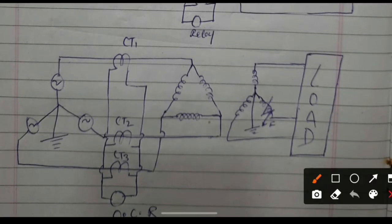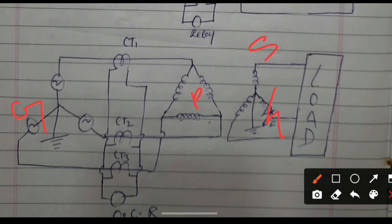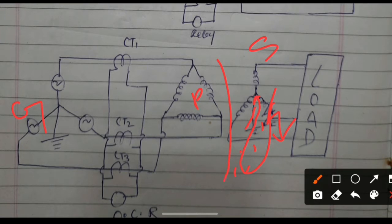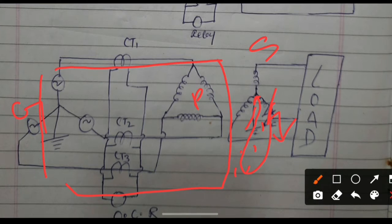Now let's start. This is the generating side, this is the transformer primary winding, and this is the secondary winding. Suppose the fault occurred in the secondary winding of the transformer, which is a star winding. The fault current circulates from this point to the neutral path, so this zone — the star winding zone — will not get the effect.